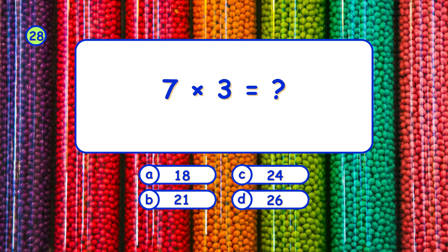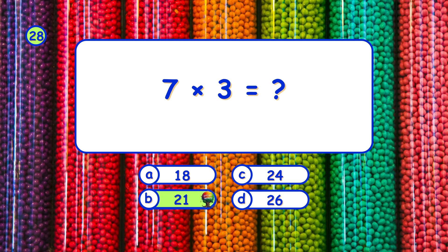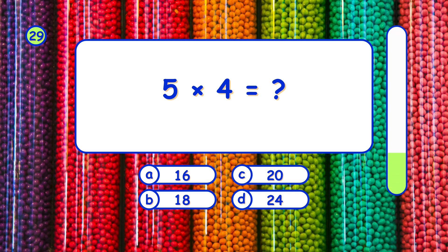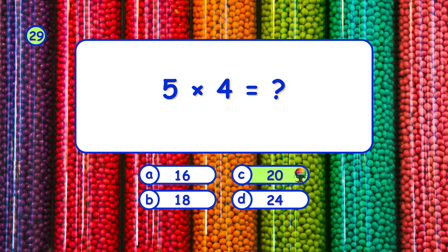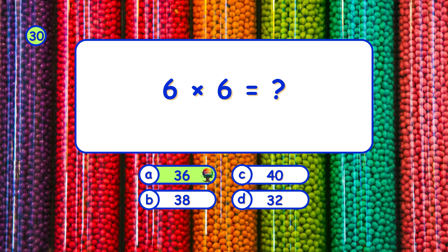What is 7 times 3? It's B, 21. What is 5 times 4? It's C, 20. What is 6 times 6? It's A, 36.